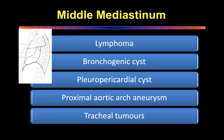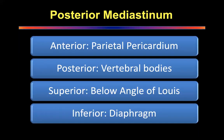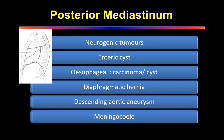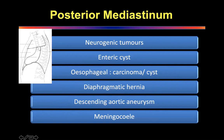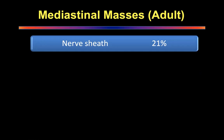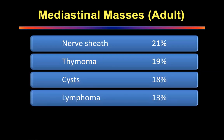The posterior mediastinum is bounded by parietal pericardium and vertebral bodies as its two limits. Common tumors there include neurogenic tumors — the commonest — enteric cysts, esophageal carcinomas and cysts, diaphragmatic hernias, descending aortic aneurysms, and meningoceles. In adults, the commonest is nerve sheath tumors. Thymoma is 19%, then cysts, lymphomas, and germ cell tumors. You must know this order of frequency.